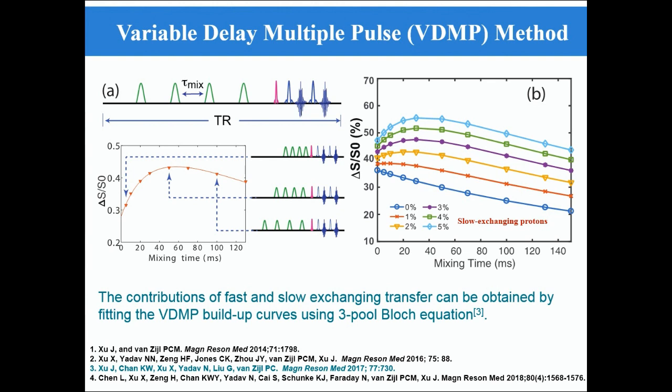Last year, we proposed a new method named VDMP to separate and quantify CEST signal by taking advantage of their exchange rate. The VDMP saturation module consists of a train of Gaussian selective pulses. The delay between successive Gaussian pulses is called mixing time. The magnetization transfer behavior for exchangeable protons during VDMP saturation is very different for slow and fast transfer components.